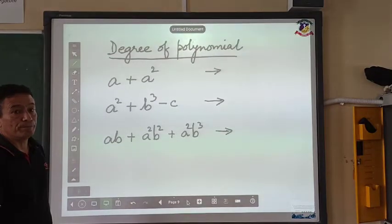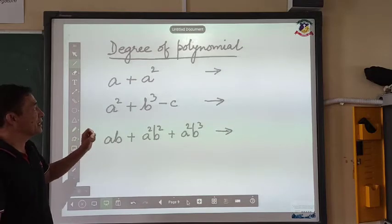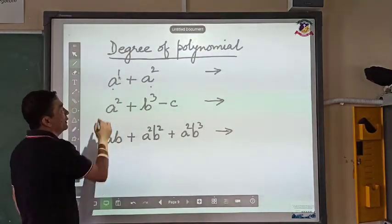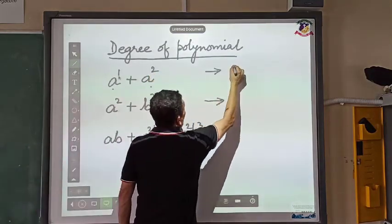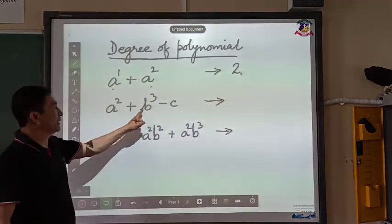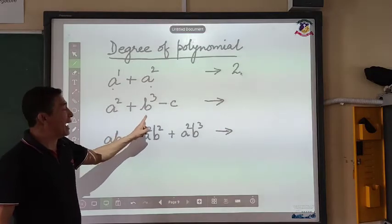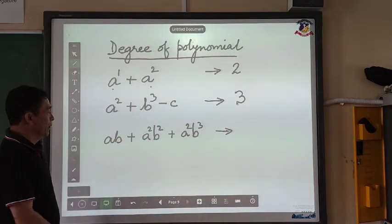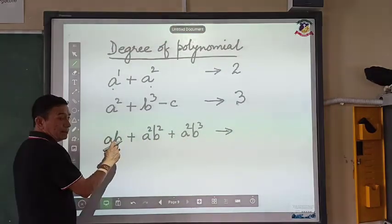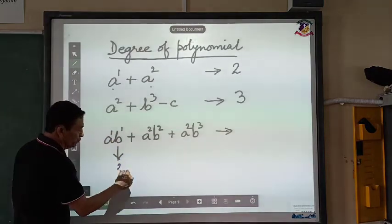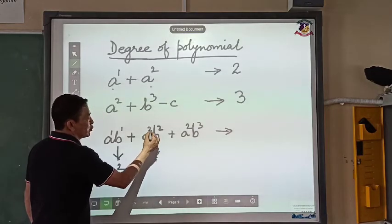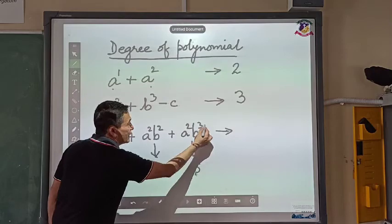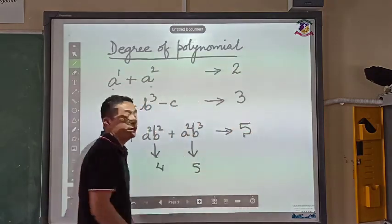The degree of the polynomial: when looking for the degree, we find which term has the highest power. If there are two terms with powers 1 and 2, the degree is 2. If the highest power among three terms is 3, the degree is 3. For a term like AB where a has power 1 and b has power 1, the total is 2. For a squared b squared the total is 4, and for a squared b cubed the total is 5 — so the degree of that polynomial is 5, the highest total.